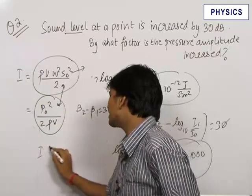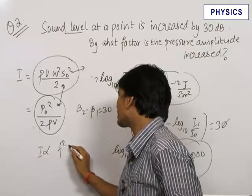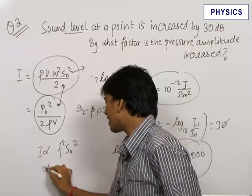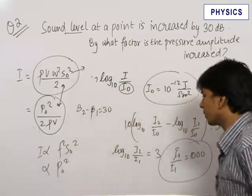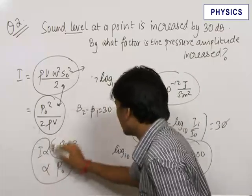You should remember both these formulas for the expression of intensity. Therefore, we know that intensity is directly proportional to f²s₀² or it is directly proportional to the square of the pressure amplitude. This is very important.